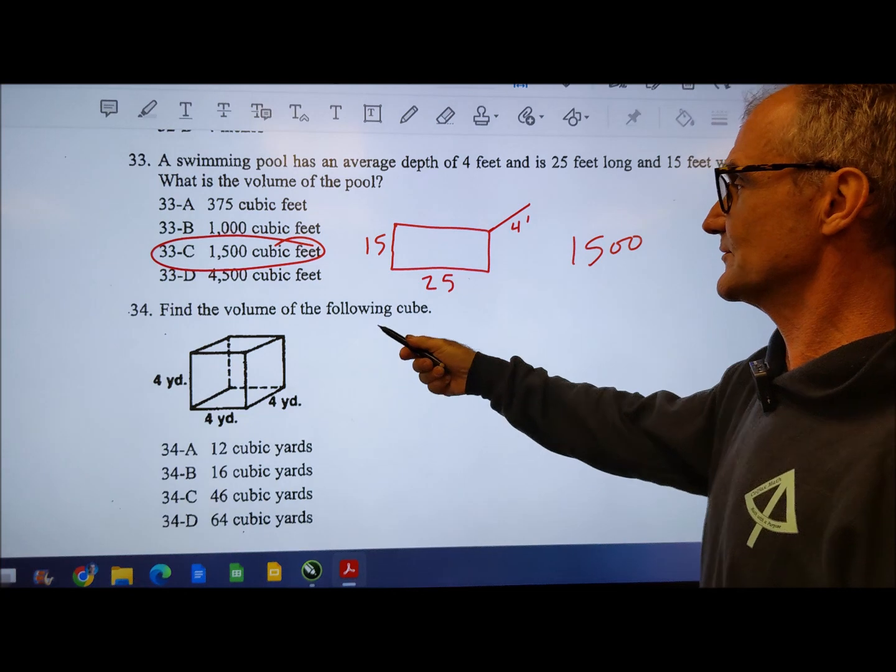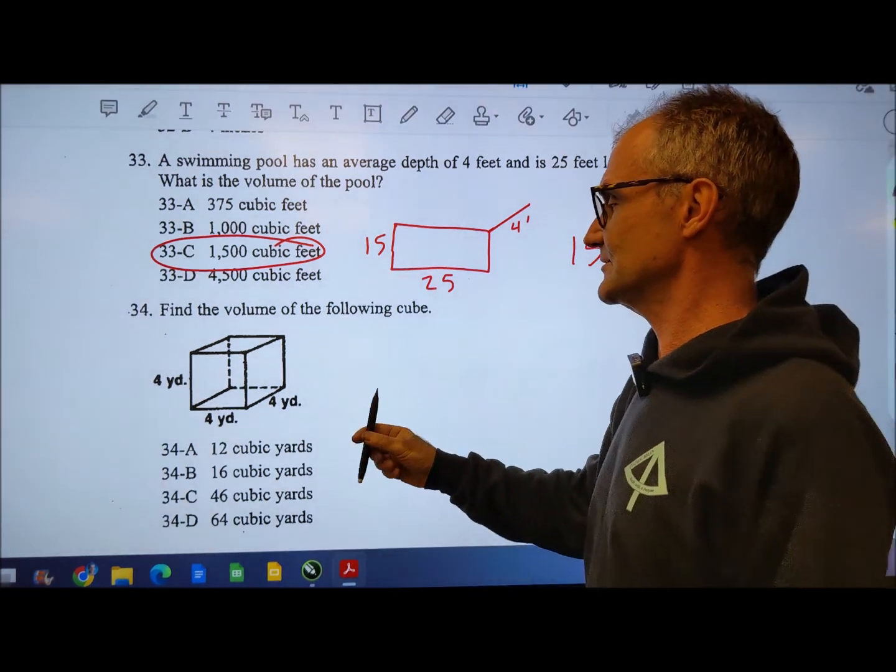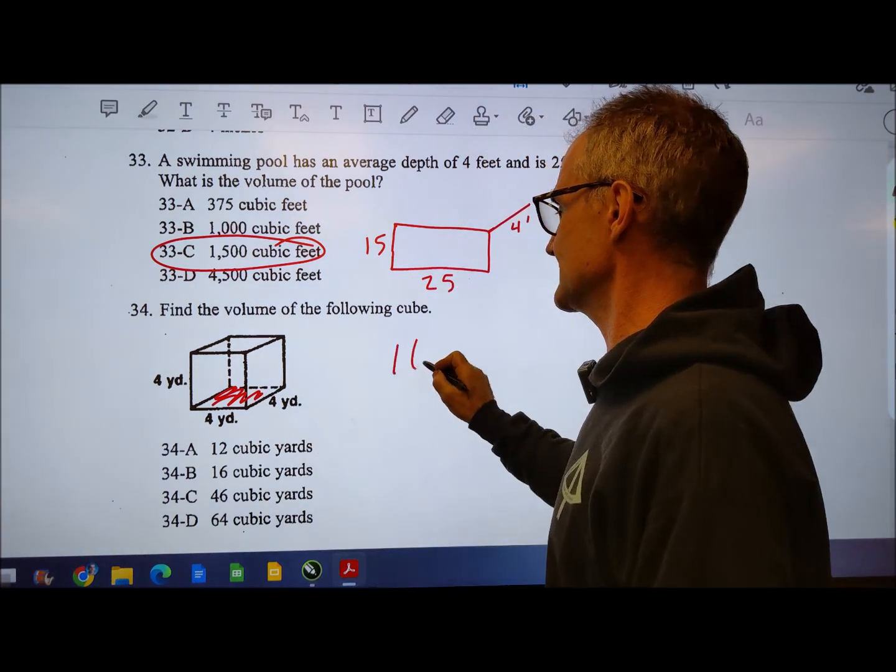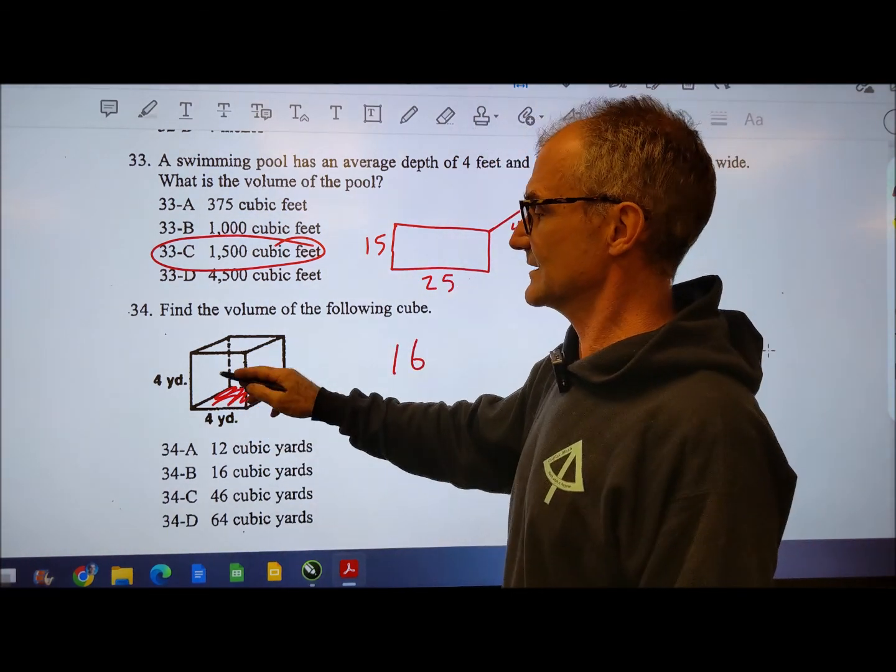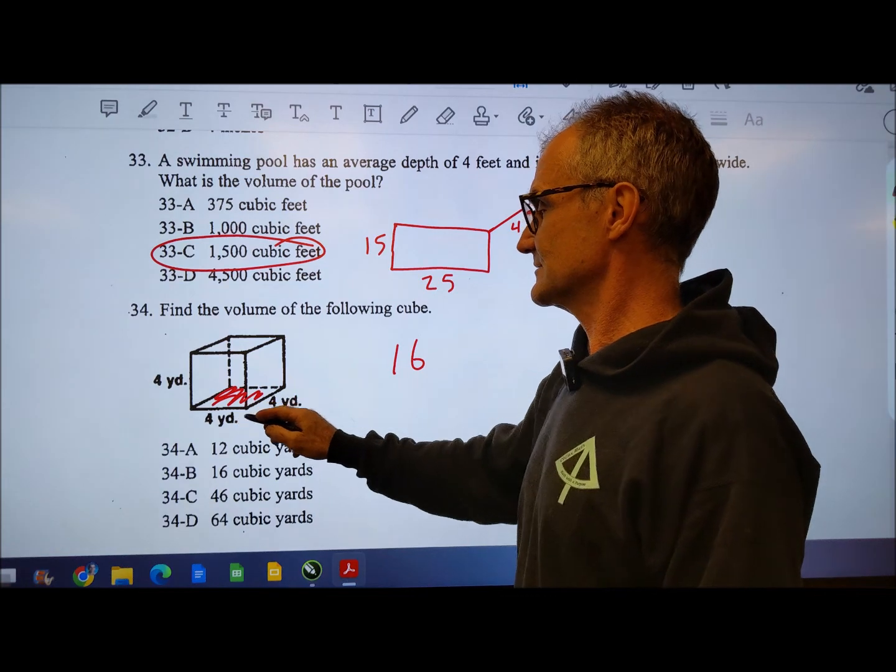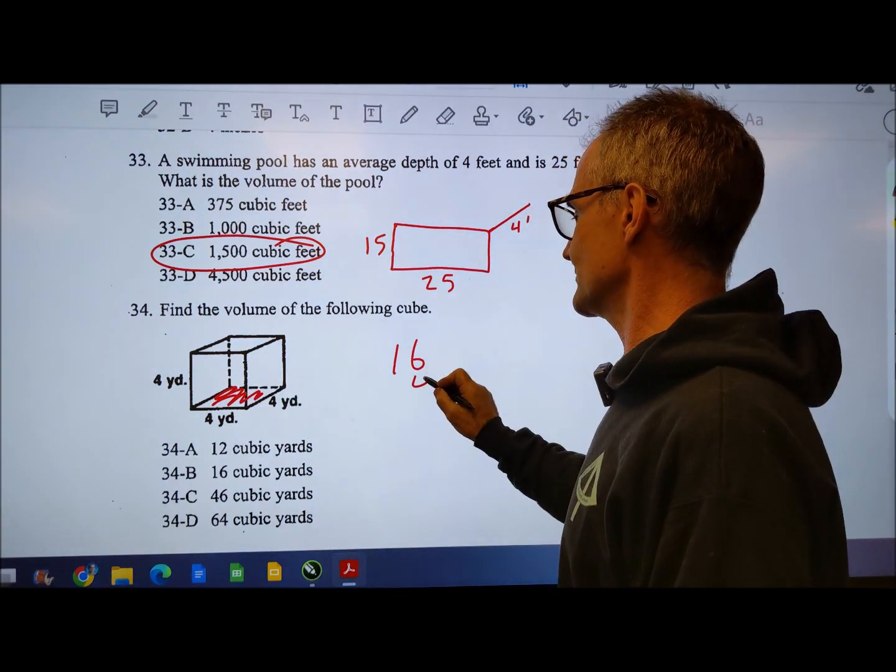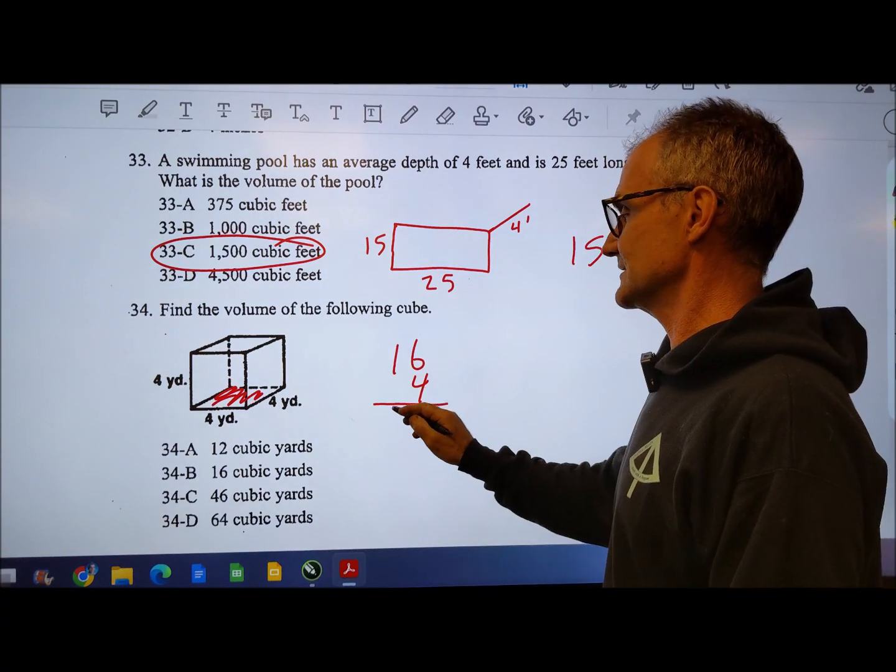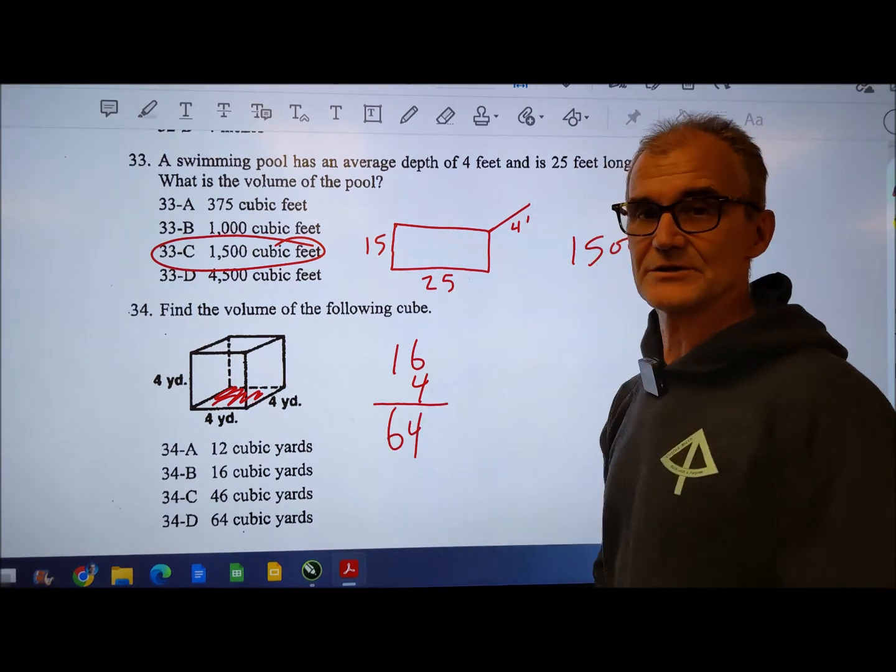Number 34, find the volume of the following cube. So I got to find the area of the base down here. 4 times 4 is 16. Then filling that cube up will be volume. So it's going to be that 16 times that 4. Doubling it once, 32. Doubling it again to get 64 cubic yards.